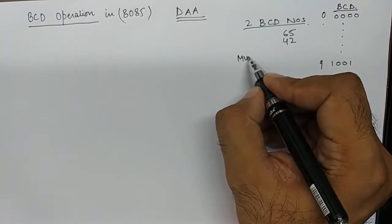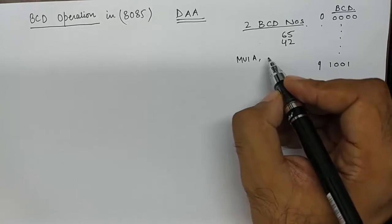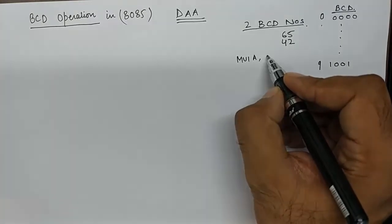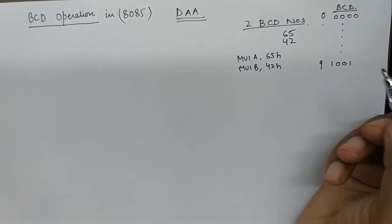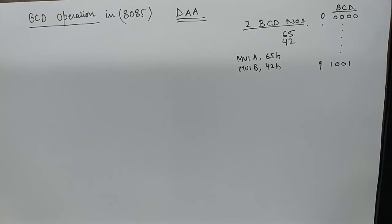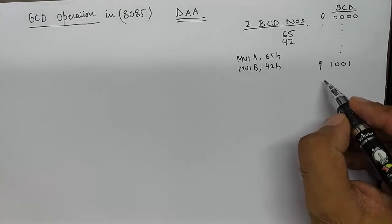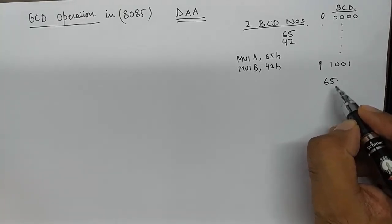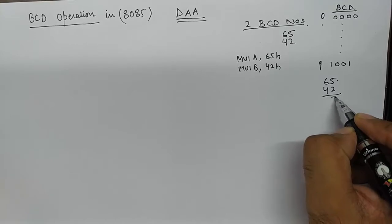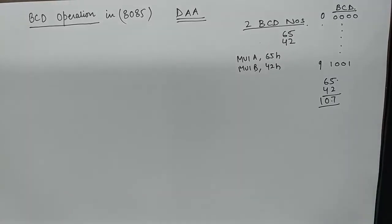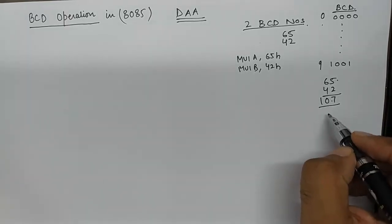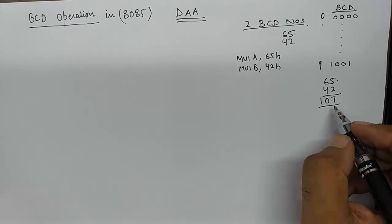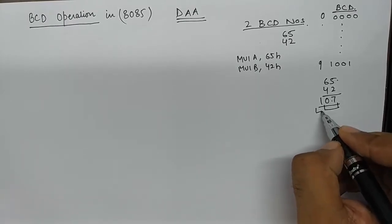If I move these BCD numbers into two registers like this, and in the third step if I wish to add these two BCD numbers, they should give me an answer. If two BCD numbers are added, they should give me an answer 107. In other words, the result in the accumulator should be 07 and 1 should be the carry.